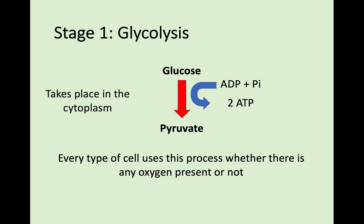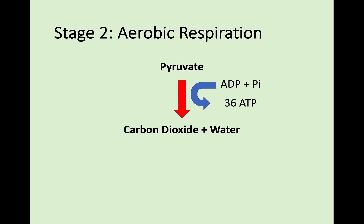If we then look at stage two — if oxygen is available, we can go into aerobic respiration. Aerobic respiration moves into the mitochondria; it only takes place in the mitochondria. That pyruvate produced in stage one is broken down into carbon dioxide and water — that's what you breathe out — and 36 molecules of ATP are also produced. So a lot of ATP is produced through breaking down that pyruvate into carbon dioxide and water.